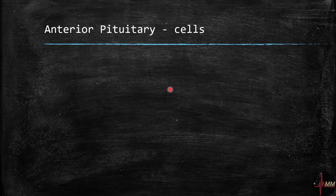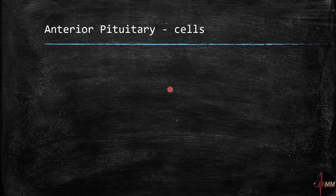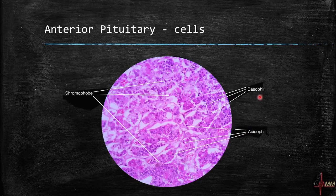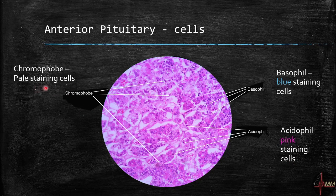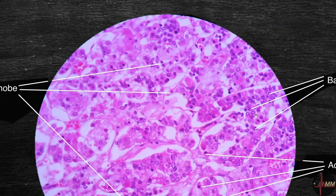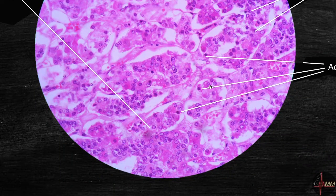Here are the cells of the anterior pituitary. The three types are acidophil, basophil, and chromophobe cells. In the histology image, basophil cells show blue staining, acidophil cells show pink staining, and chromophobe cells show pale staining with clear cytoplasm.